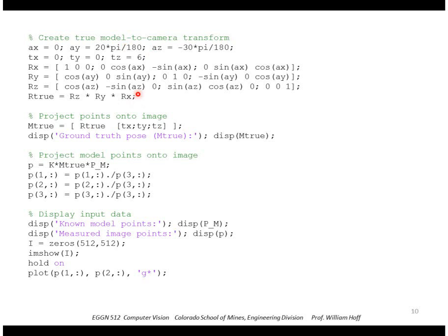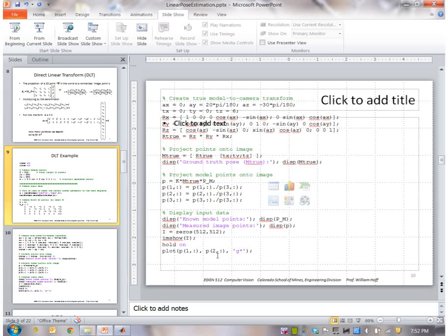Here we're going to define our model-to-camera transform. We're creating a rotation matrix and a translation. Here's our extrinsic parameter matrix. We're going to display that, apply that to our model points, normalize those image points, then project them and display them onto an image of size 512 by 512.